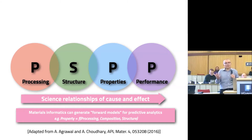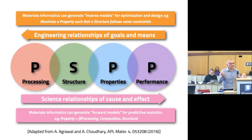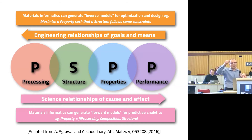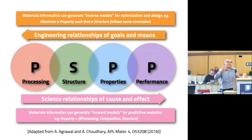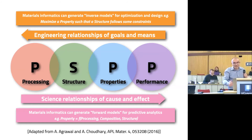What we are also interested in is going the other way around. Let's say I want to achieve a given performance — what is the processing, what are the structures I want to get, what are the properties I need in order to achieve that performance? That's the inverse relation, called inverse design, because we want, for instance, to maximize a property such that it meets the requirement for the application we have in mind.